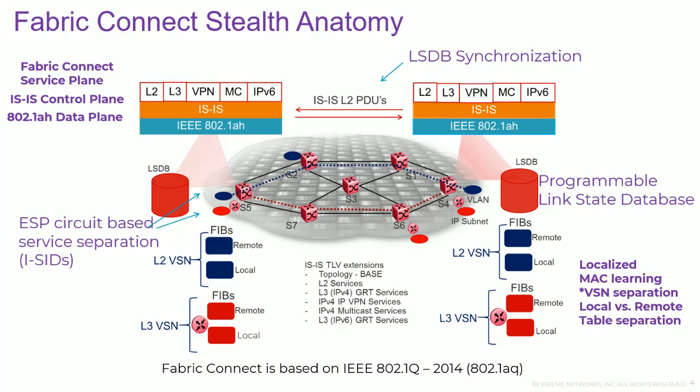ISIS instances are synchronized through ISIS as a protocol, creating a programmable link-state database distributed across the fabric — there is no centralized controller. Notice the localized MAC learning, VSN separation between virtual service networks, and separation between locally versus remotely learned MAC addresses. This makes ARP poisoning and MAC spoofing much, much more difficult.